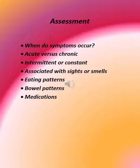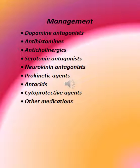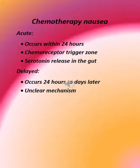Assessment: When do symptoms occur? Acute versus chronic, intermittent or constant, associated with sights or smells, eating patterns, bowel patterns, and medications. Management includes: dopamine antagonists, antihistamines, anticholinergics, serotonin antagonists, neurokinin antagonists, prokinetic agents, antacids, cytoprotective agents, and other medications.